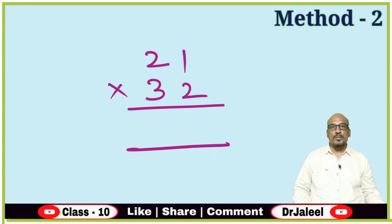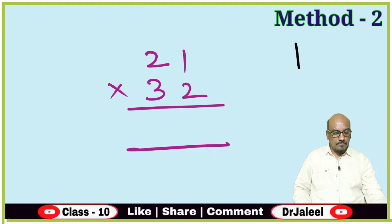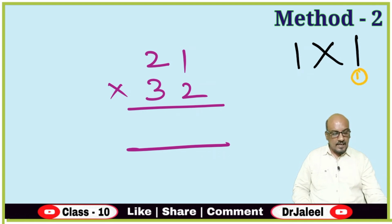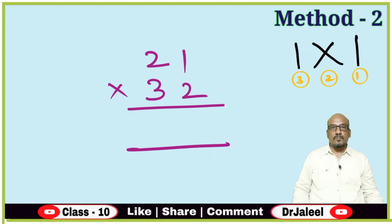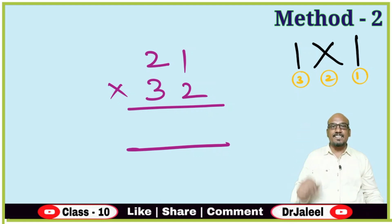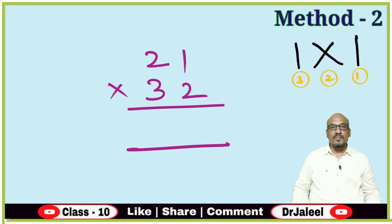Let us see this example: 21 into 32. Before going into this, I will give you a diagram to remember: I, X, I. The first step is I — you multiply the right side digits. The second step is X — you do cross multiplication. The third step is I — you multiply the left side digits.